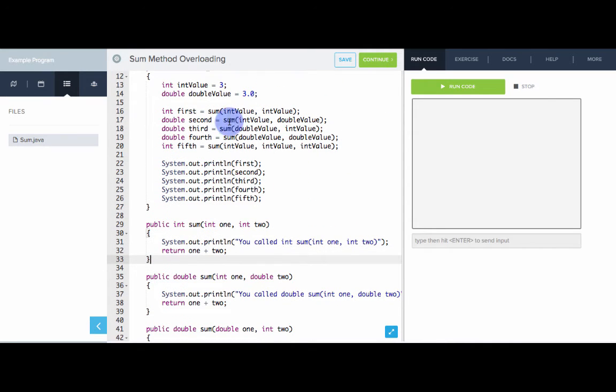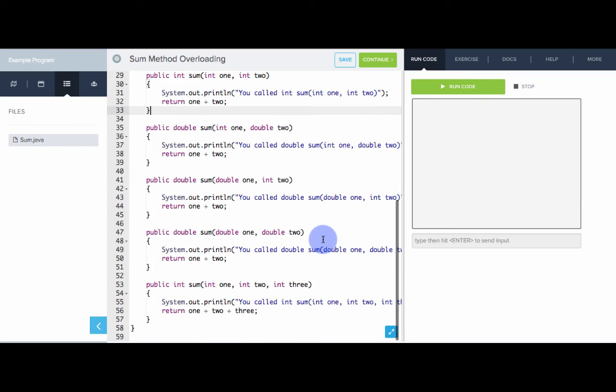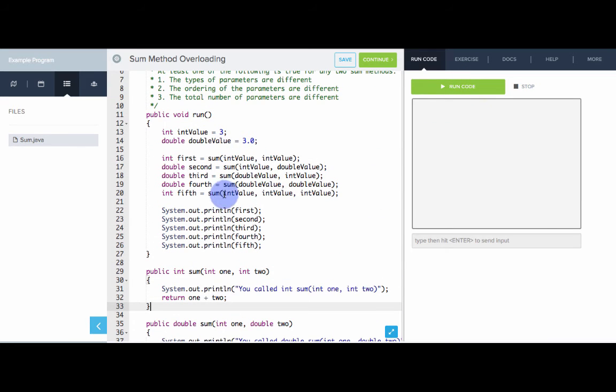Here in run, we have several different calls. One is calling int int, the next one int double, double int, double double, and then all three ints. So, each of these should be calling a different method, and then we'll print out the results. So, let's see if Java can, in fact, figure out the difference between all of these sum calls.